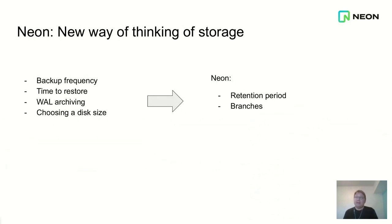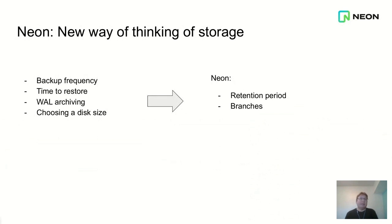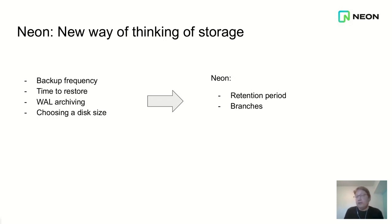But Neon changes that way of thinking — you don't need to think about those things anymore. Instead, you think in terms of retention period: how long do you need to keep your data? If you want to keep data for one week, one month, or a year, you configure that. It takes up some storage, but cloud storage is cheap. It's a user-configurable setting. And you can also do branches with this — the non-overwriting storage is important for our branching feature, because since we don't modify files, it's very easy to do copy-on-write.